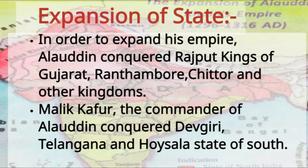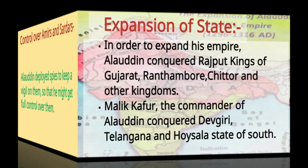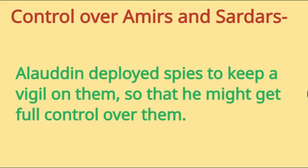In order to expand his empire, Alauddin conquered Rajput kings of Gujarat, Ranthambhor, Chittor, and other kingdoms. On the other hand, Malik Kafur, the commander of Alauddin, conquered Devgiri, Telangana, and the Hoysala state of the south. In this way, he expanded his empire from north to south.